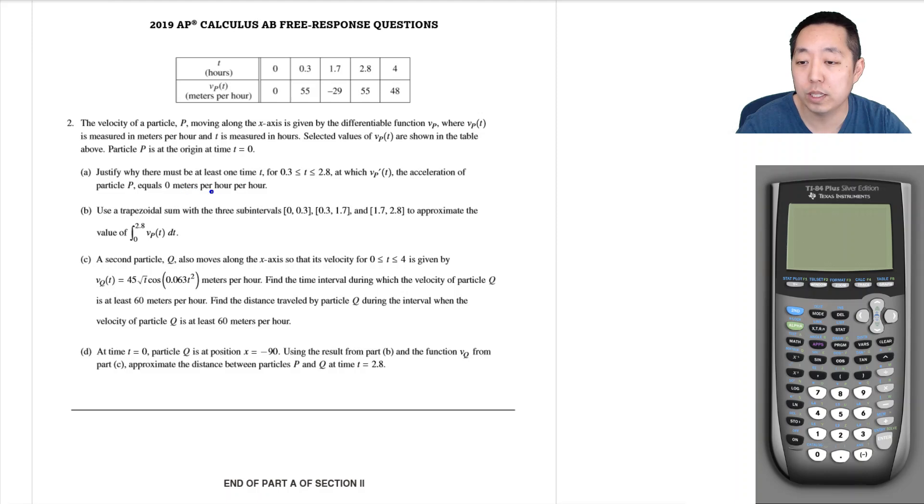Justify why there must be at least one time T between here and here for which VP prime of T, the acceleration of particle, equals zero.